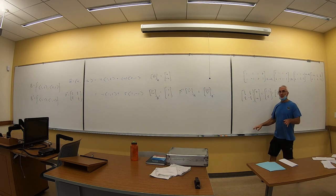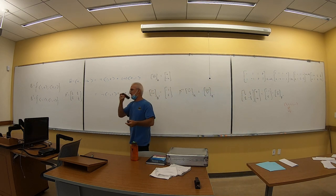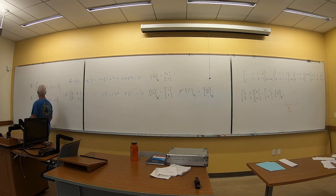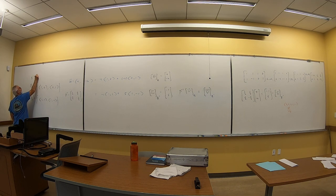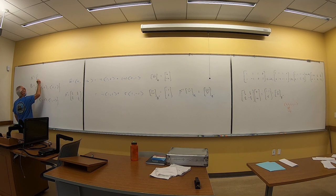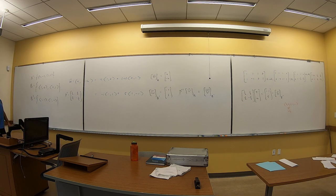Now I want to do a non-standard to non-standard transition so you can see why the process is necessary. Let's come up with one more basis, B double prime: let's say (2, -1) and (1, 2). I'm keeping the numbers small on purpose.